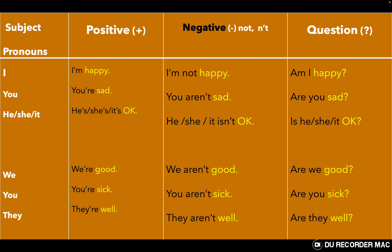In the negative form, we add the word 'not' or the contracted form with 'n apostrophe t': I am not happy, you aren't sad, he isn't okay, she isn't okay, it isn't okay, we aren't good.